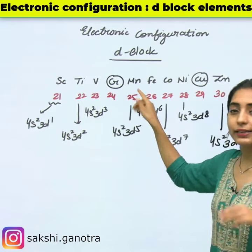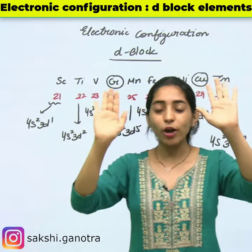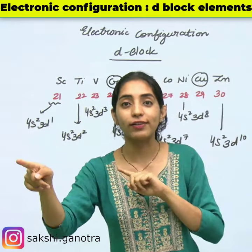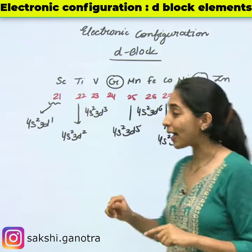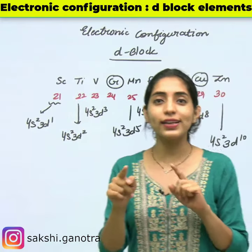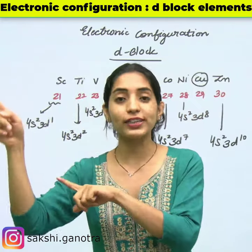For example, Manganese — atomic number is 25 — so 4s2 3d5. Let's take another example: 26, which is Iron — 4s2 3d6.